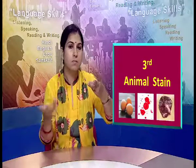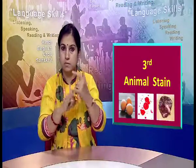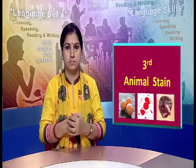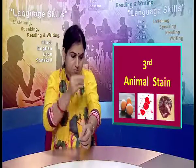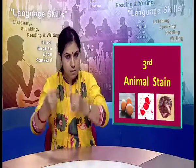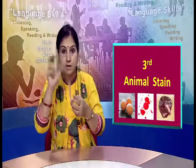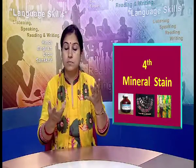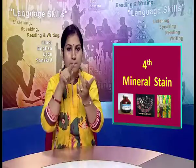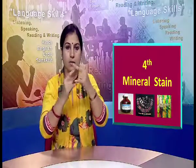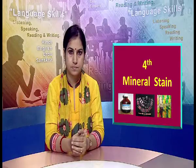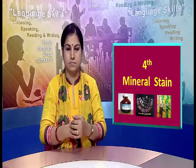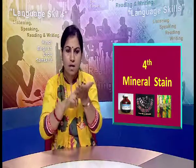The third type of category is animal stain. Animal stain includes blood, milk, and egg. The fourth type of category is mineral stain, which includes rusting due to iron hangers and iron baskets.